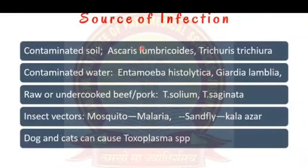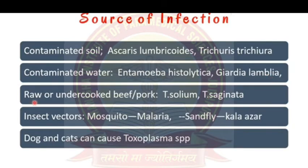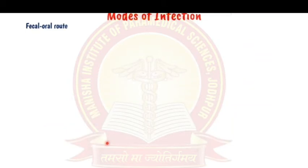Sources of infection include contaminated soil — eating food contaminated with soil can cause Ascaris lumbricoides or Trichuris trichiura infection. Contaminated water — infected with fecal matter — can cause Entamoeba histolytica or Giardia lamblia, leading to diarrhea. Raw or undercooked beef or pork can cause Taenia solium or Taenia saginata. Insect vectors cause malaria and sand fly transmits kala-azar. Pet animals like dogs and cats can transmit Toxoplasma and Echinococcus.